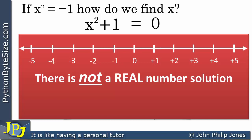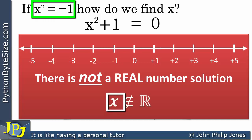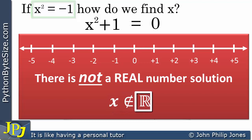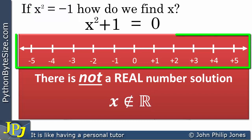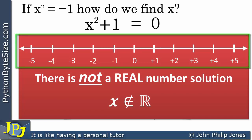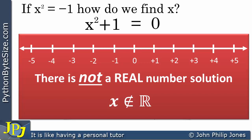In mathematical terms, x does not belong to the real number set. There is no number along the entire number line — all the way to positive infinity and all the way to negative infinity — that will satisfy x squared equals minus 1. You will not find a value of x such that when squared it gives you minus 1.